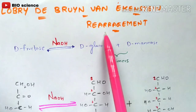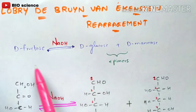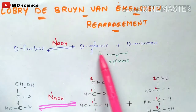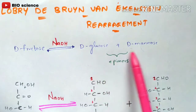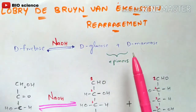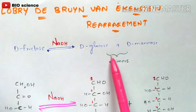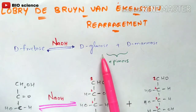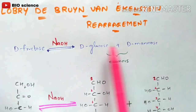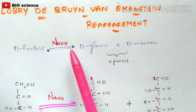The main aim of this rearrangement is that D-fructose should get converted to D-glucose and D-mannose. We know that D-glucose and D-mannose are considered as epimers, which we are going to discuss later. D-fructose can be converted to D-glucose and D-mannose by using a salt called sodium hydroxide, NaOH.